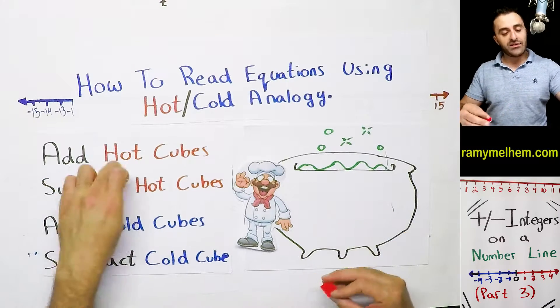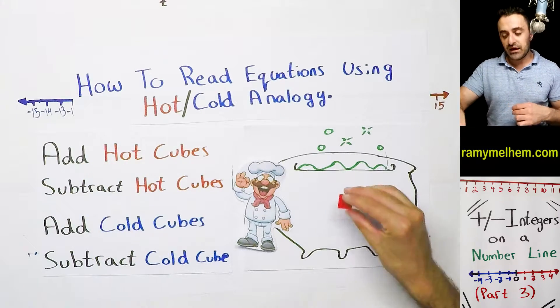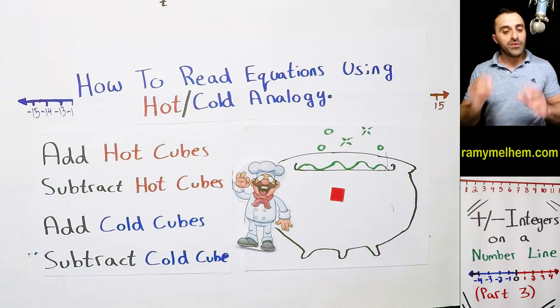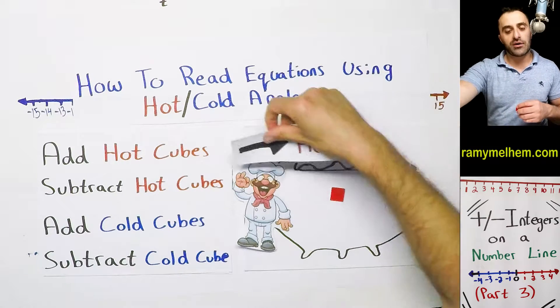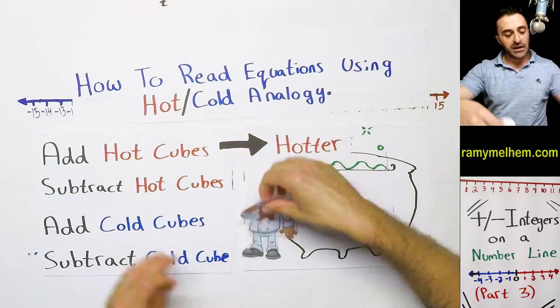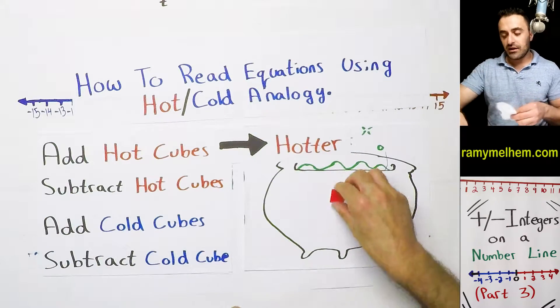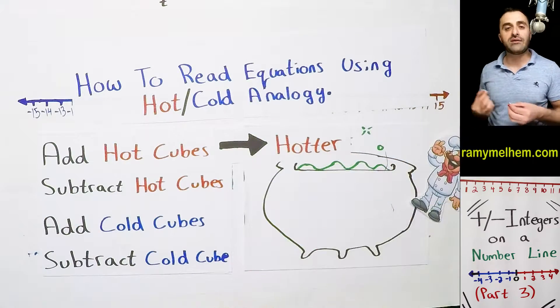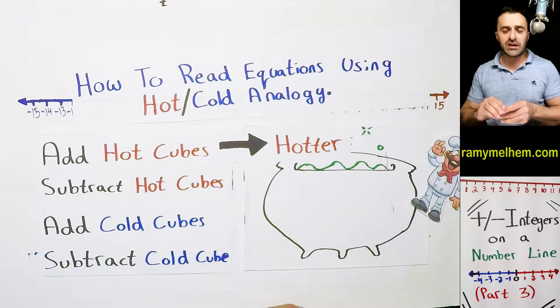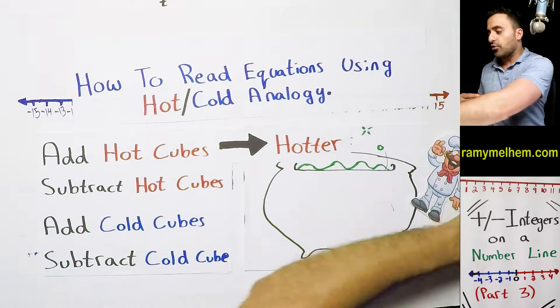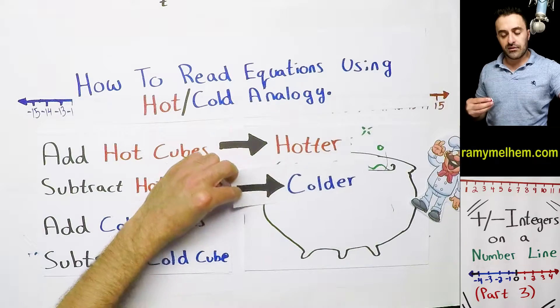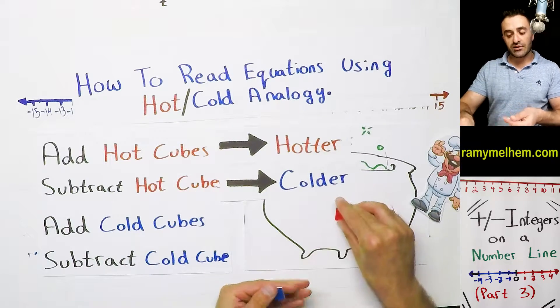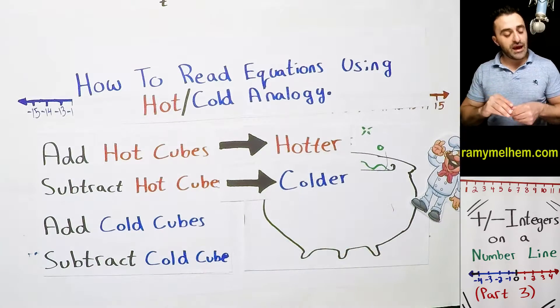So if he added the hot cubes, let's take a look at this one first. If you add the hot cubes, what that'll do to the temperature is it'll make it hotter. But if that hot cube is subtracted like this, if you subtract it out, that soup can no longer get hotter. It starts getting colder. Because that hotness is gone. So you subtract hot, it becomes colder.